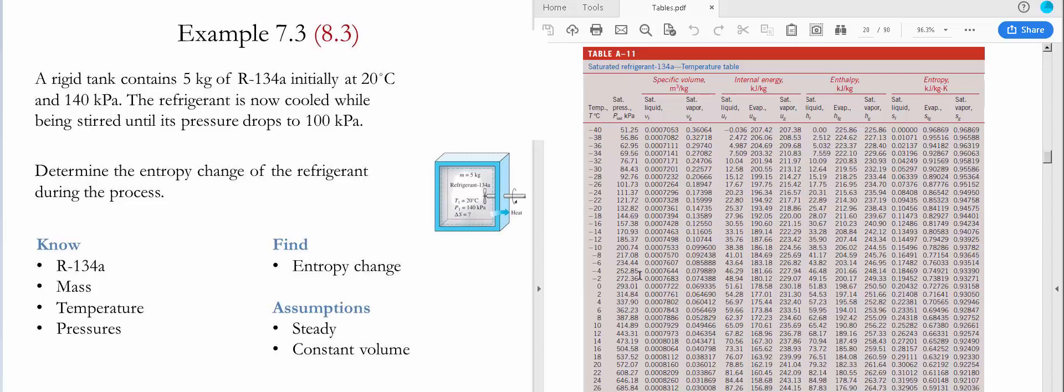For that we go to table A11. We see that at 20 Celsius the saturated pressure is 572.07 kilopascals. The working pressure at this state is 140, which is lower than the saturated pressure, indicating that at this state the refrigerant is superheated vapor.